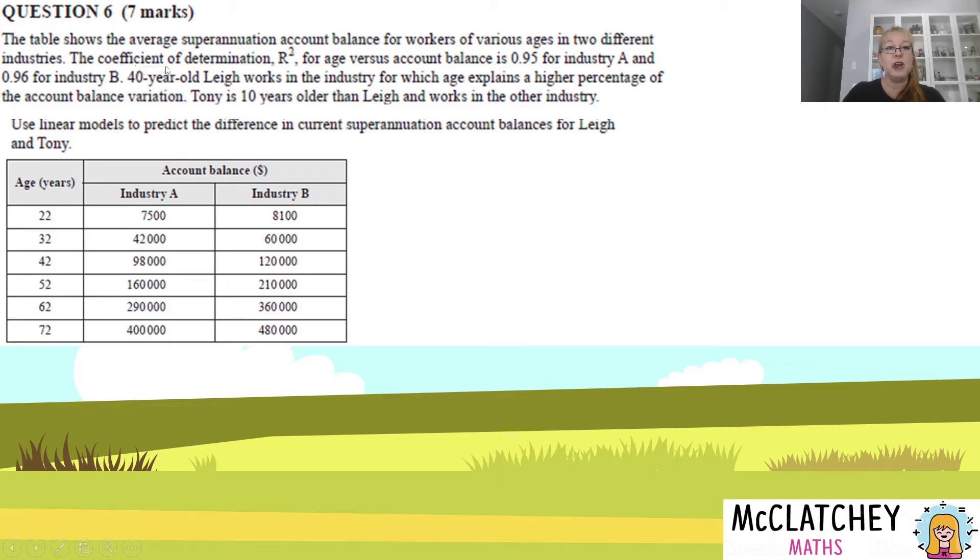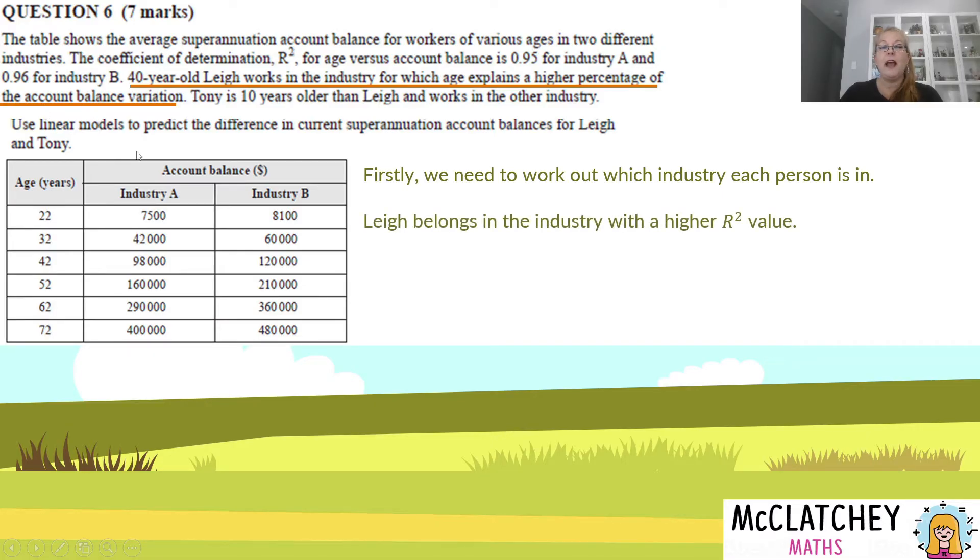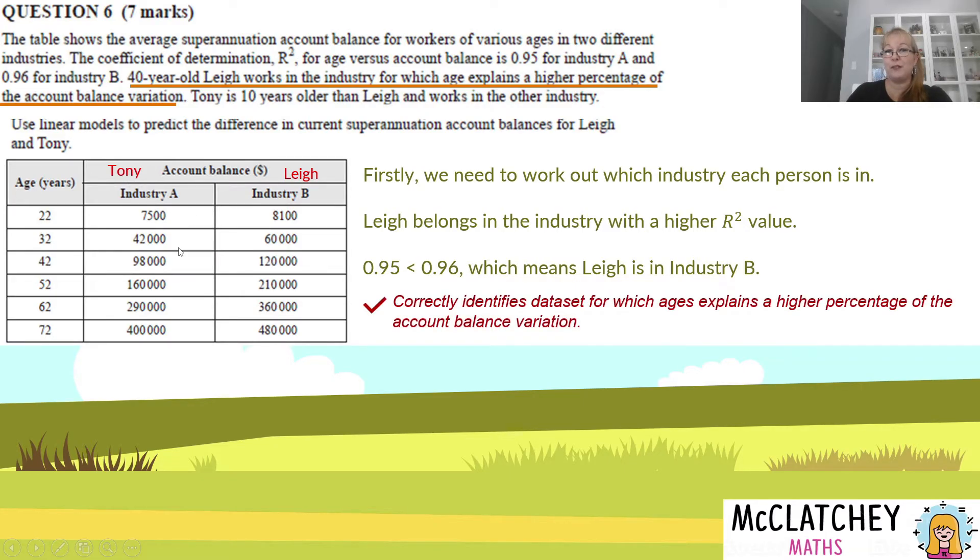We're told the coefficient of determination R squared is 0.95 for industry A and 0.96 for industry B. Lee works in the industry for which age explains a higher percentage of the account balance variation. That's a complex way of saying Lee works in the industry with the higher R squared, which is 0.96. So Lee needs to be working for industry B. We'll put that in here because 0.95 is less than 0.96. So there's Lee, which means that's Tony. Once we've identified who's who, we get our first mark.